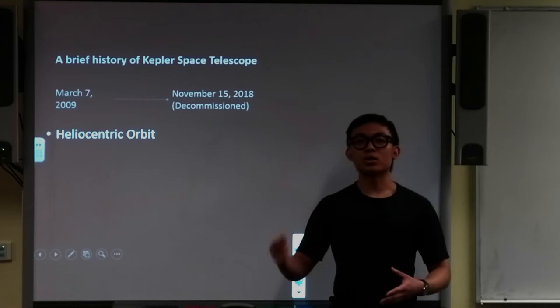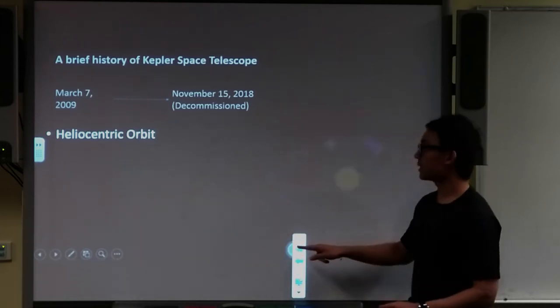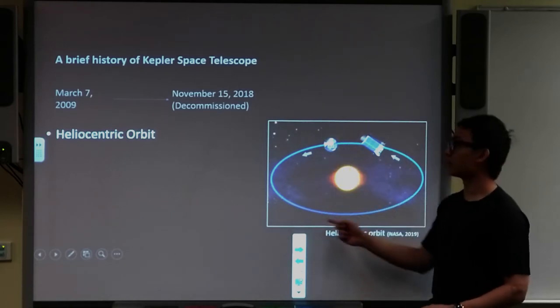After its launch, the telescope was placed in a heliocentric orbit. Now what that means is the telescope was actually revolving around the Sun.